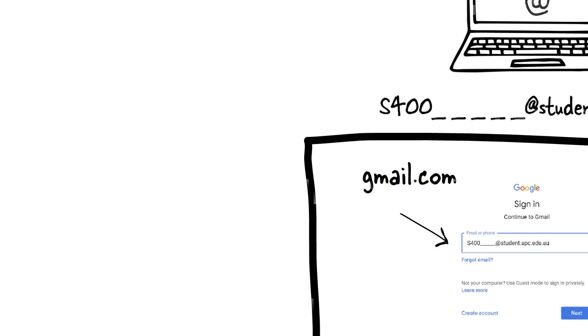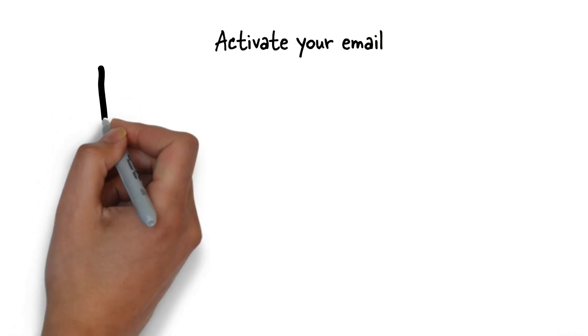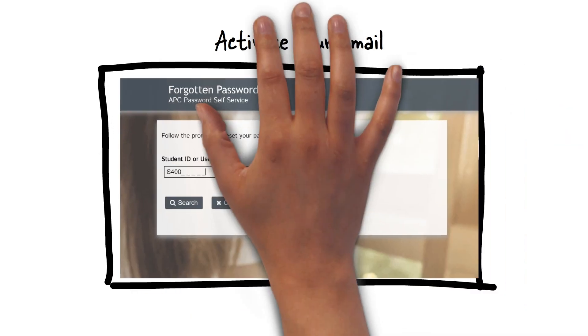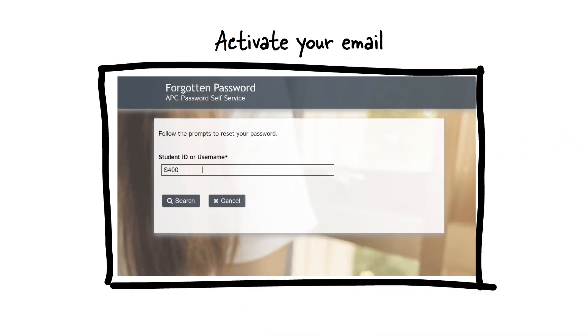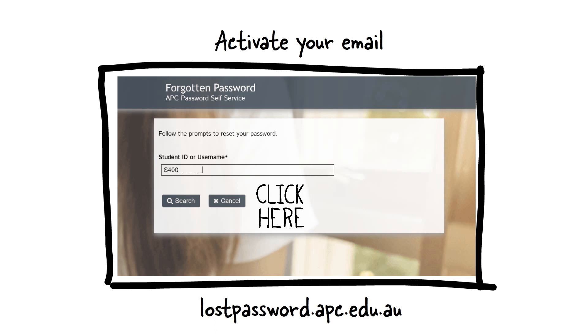Before you can access your student email, student portal and MyAPC Hub, you need to activate your new student email and set up your password. Go to lostpassword.apc.edu.au, enter your student number and click Search.